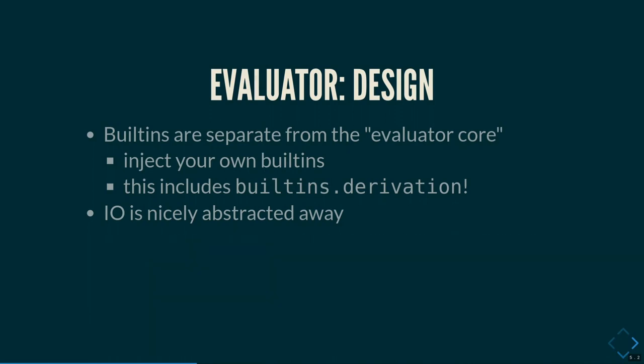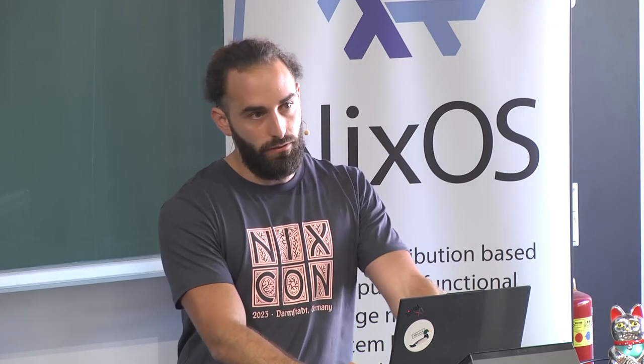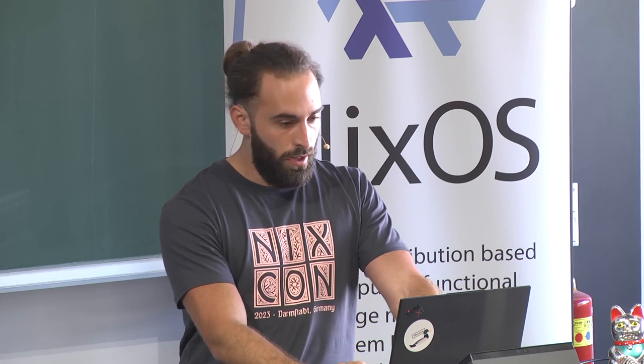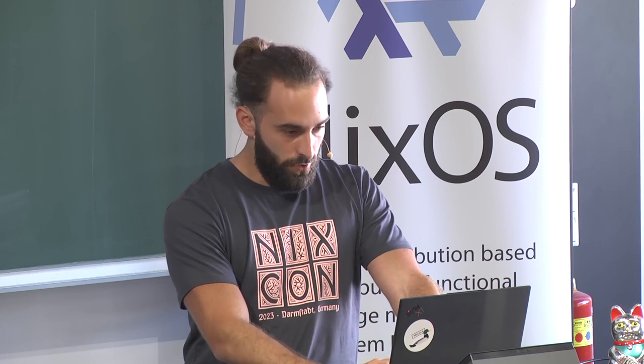I/O is also abstracted away. There is a trait that gets implemented and handles all the I/O and specific file system access, which allows us to run Nix language in a subset without any I/O in Wasm in the browser. You can also write a Rust program that accepts Nix code, instantiates functions in a custom way, and passes it into a config structure. I have a demo for Twix Bolt, which is the evaluator in the browser.